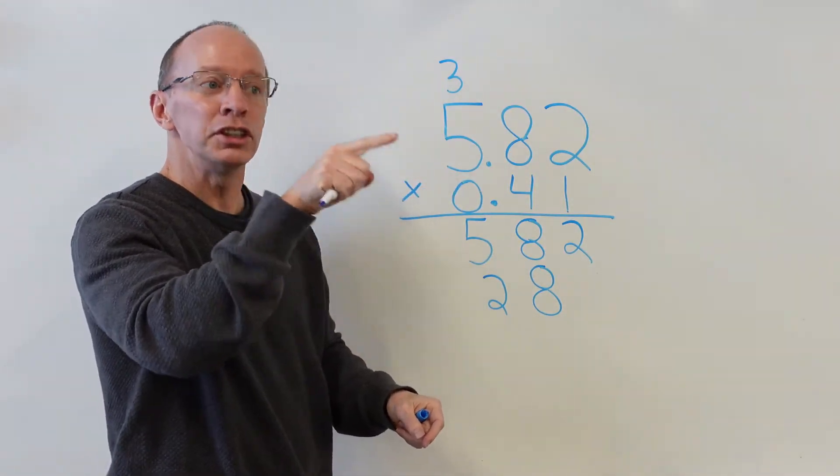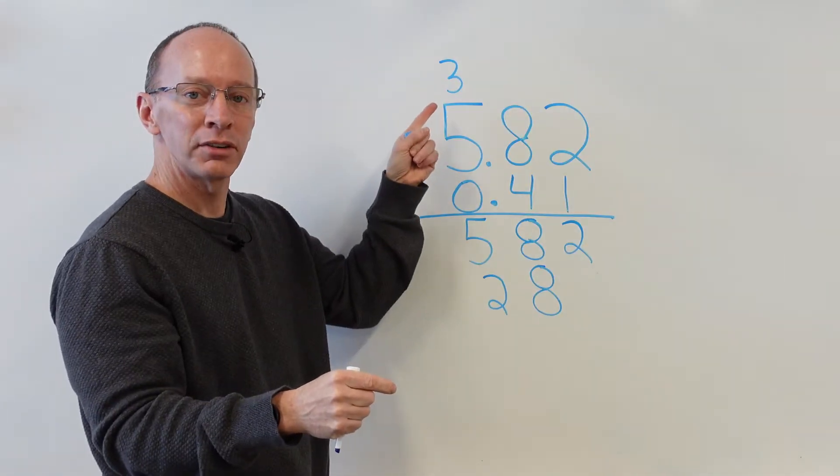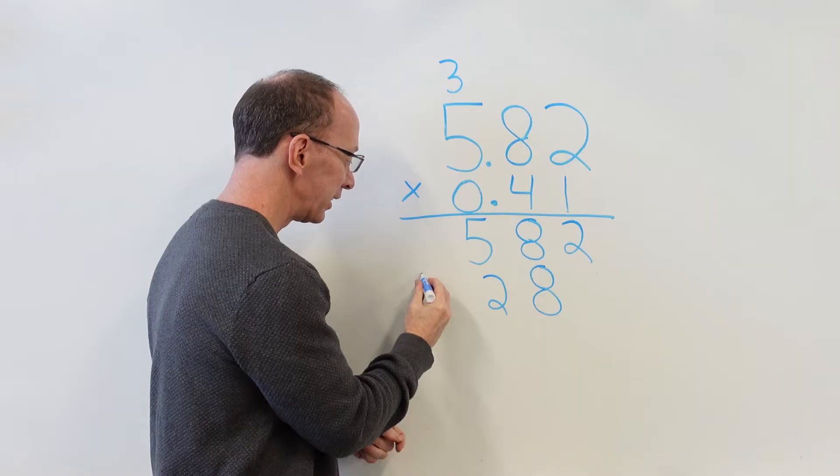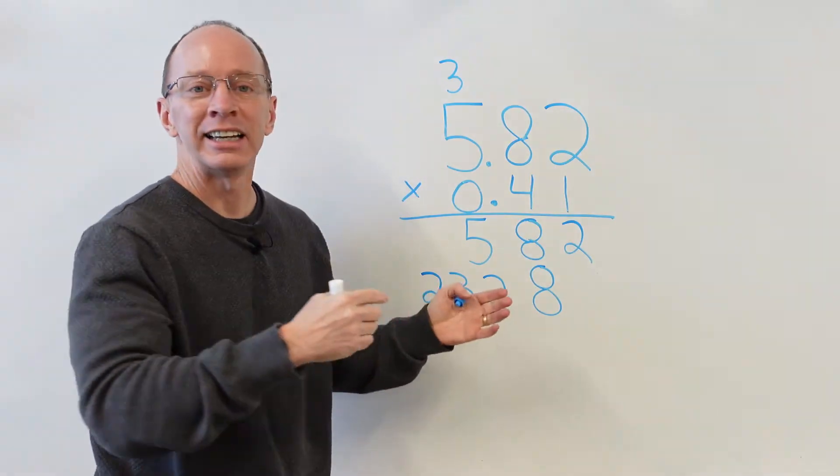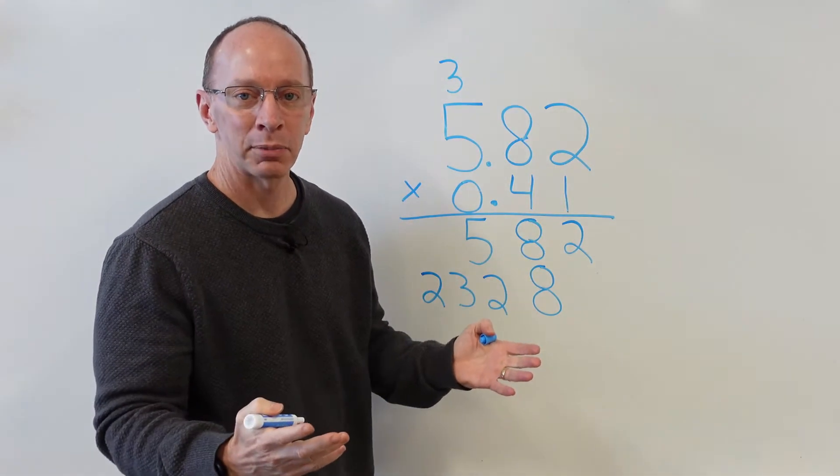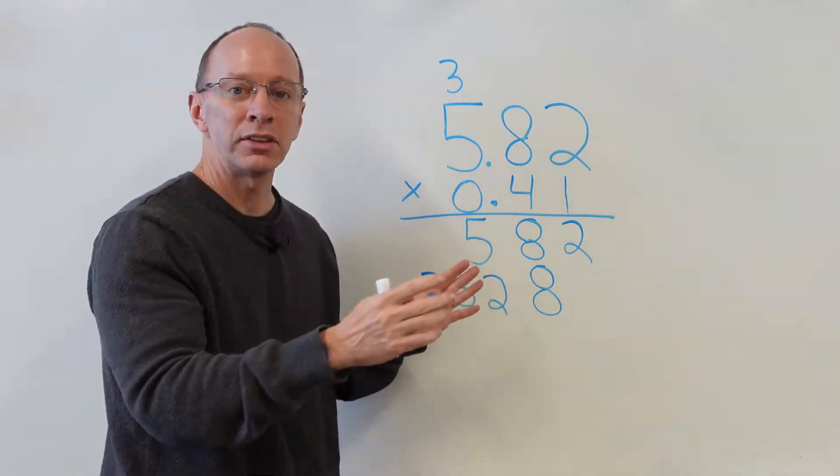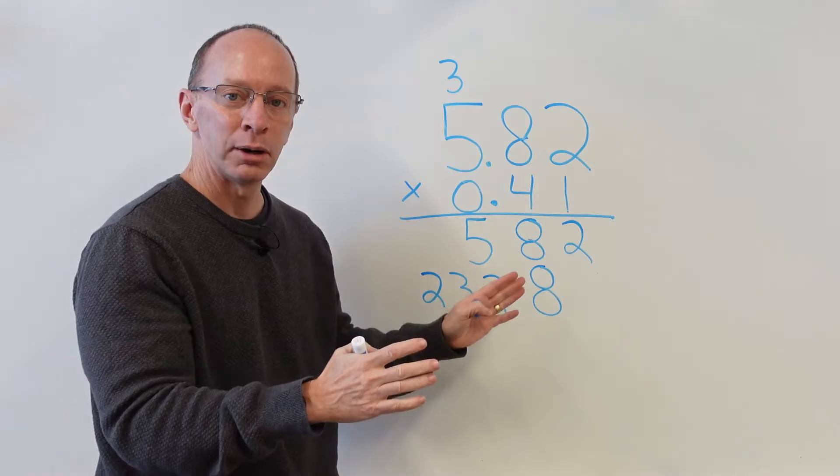4 times 5 is 20. 20 plus 3, 23. You guys got it. And just like doing all the other math problems, it's important to line up everything, to be neat with your writing and your numbers.